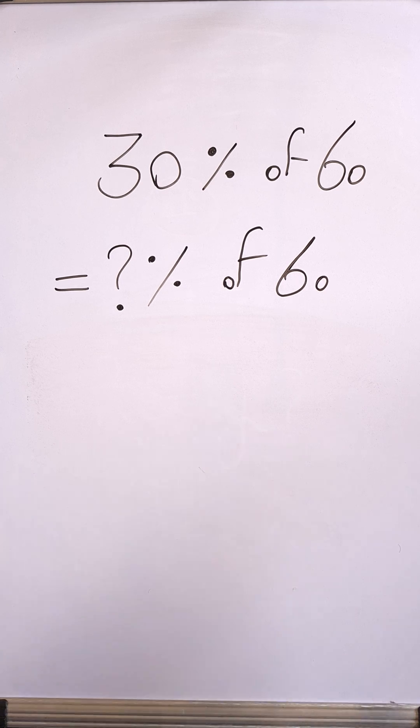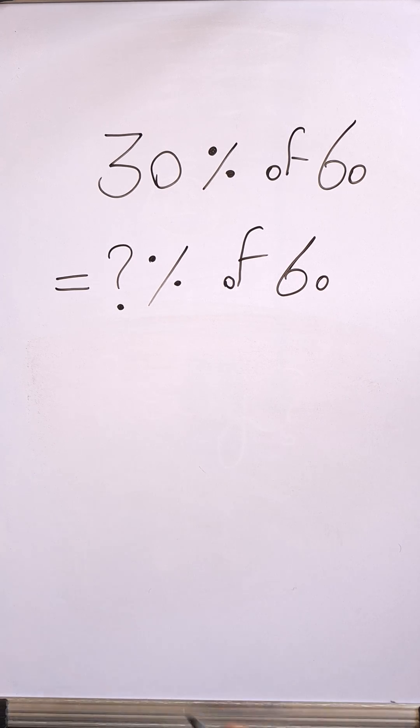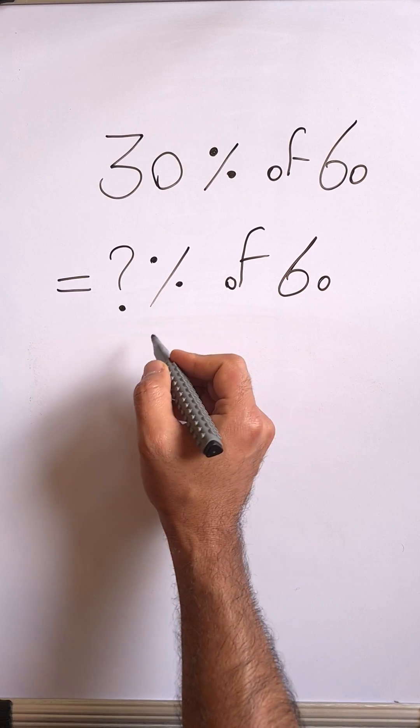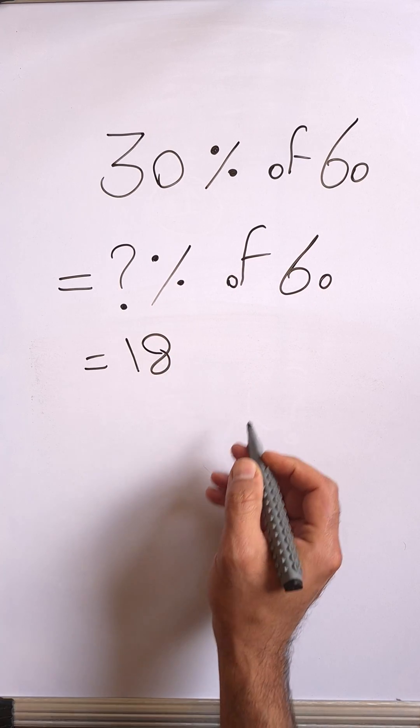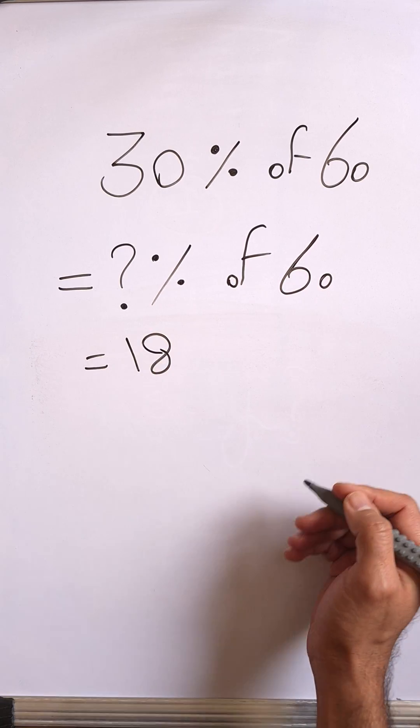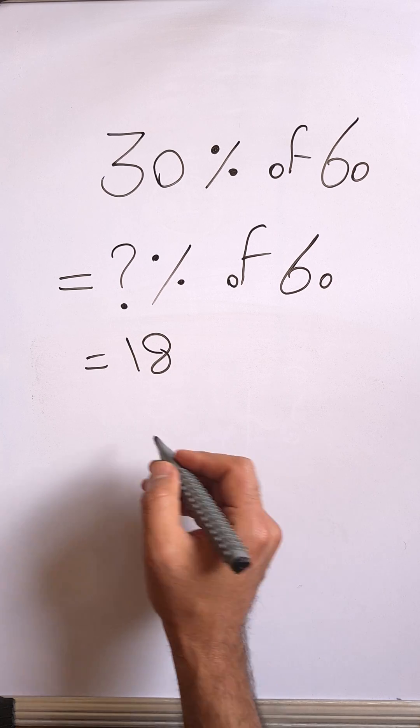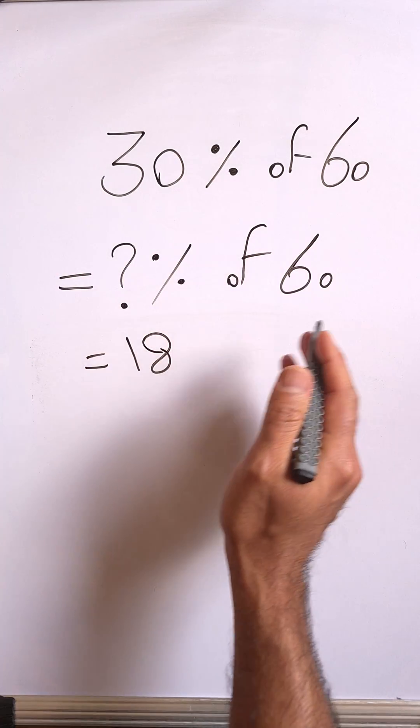I know it sounds easy, it's too easy to be true, but let's just calculate it. So 30 percent of 60 is just 18, right? And 18 is what percent of 60?